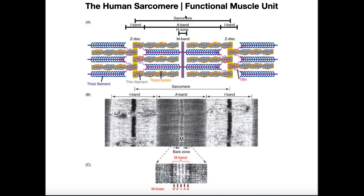To understand the bands, we first have to define the limits of a sarcomere. A sarcomere is defined as being from the Z-disc to the next Z-disc — Z to Z. That's a sarcomere. Everything in between those two Z-discs is one sarcomere. Right in the dead center of the sarcomere, between the two Z-discs, is the M-line — M standing for middle.